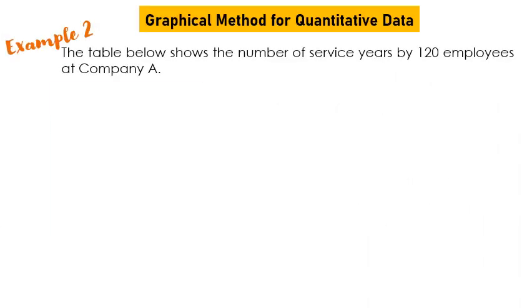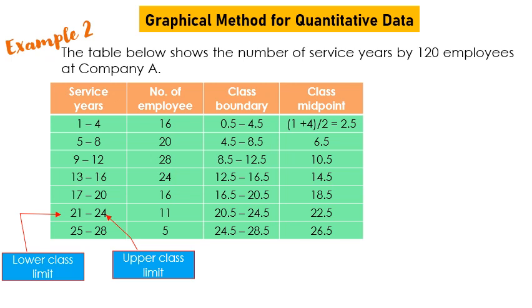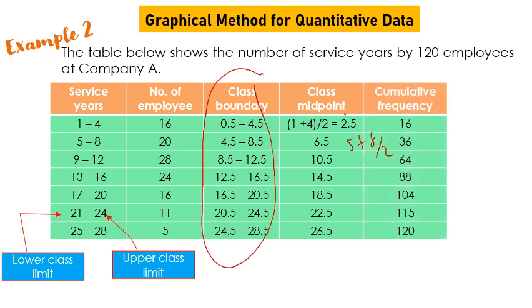Example 2: lower class limit, upper class limit, and class boundaries are identified. Class midpoint is calculated as (1 + 4) / 2 and (5 + 8) / 2. Cumulative frequency is obtained by summing: 16, then 16 + 20 = 36, then 36 + 28 = 64. Class width equals 4.5 minus 0.5, giving 4.